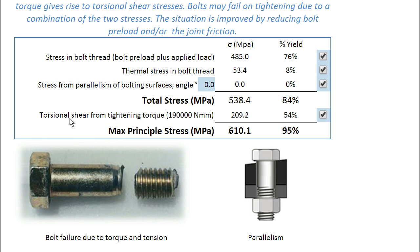There's another important element of stress to consider when thinking about bolts. If we've used a torque tightening method, then there's also some torsional shear stresses in the bolt. This is the torque tightening used in this particular example, and it's given rise to quite a high shear stress — almost 54% of the available shear stress.